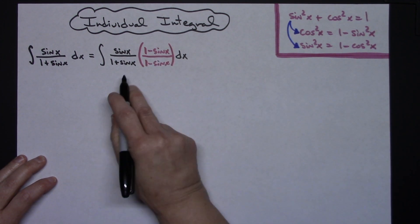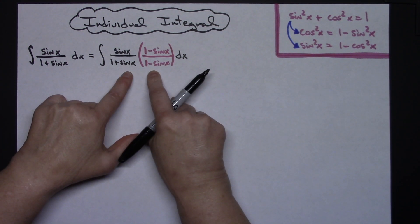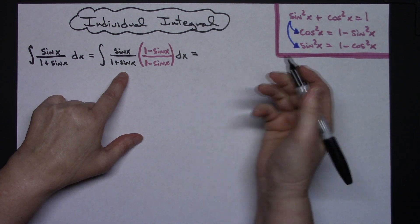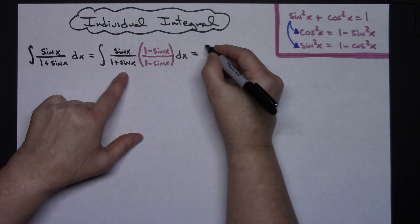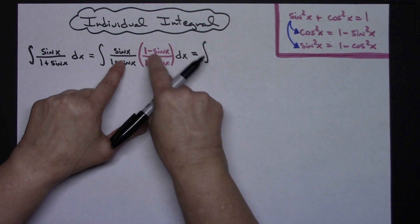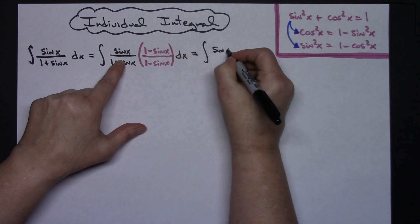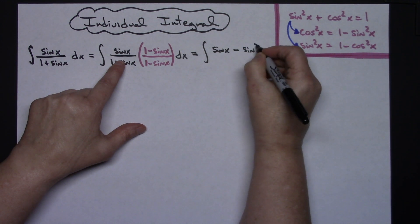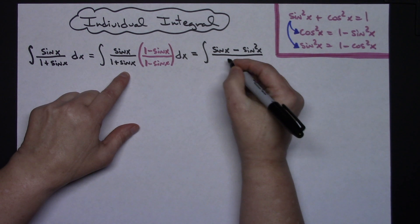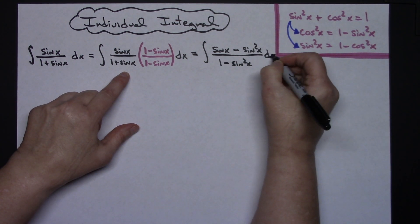Doing that forces a difference of two squares on the bottom. This is the factored form of a difference of two squares, so you can foil that back out, which makes for a nice easy way to multiply and simplify the denominator. So I'll have the integral of — distributing that sine on top — sine x minus sine squared x. On the bottom, foiling this out, I'll have 1 minus sine squared x, and then dx.